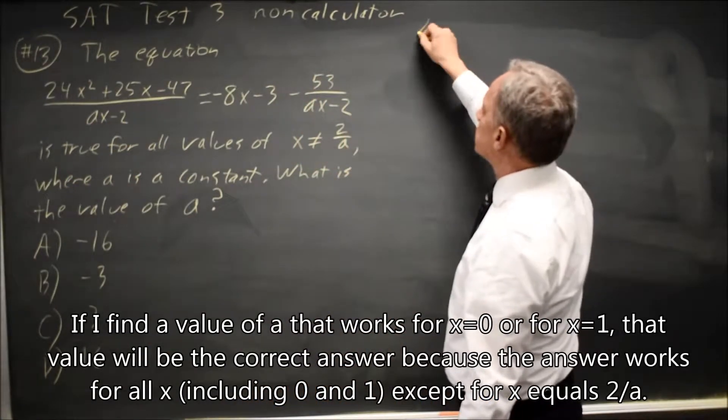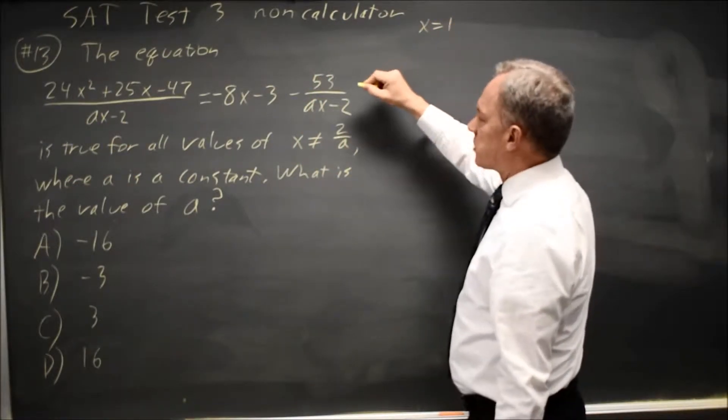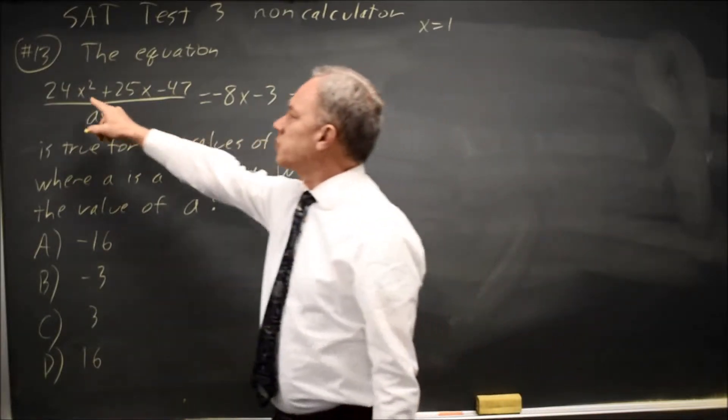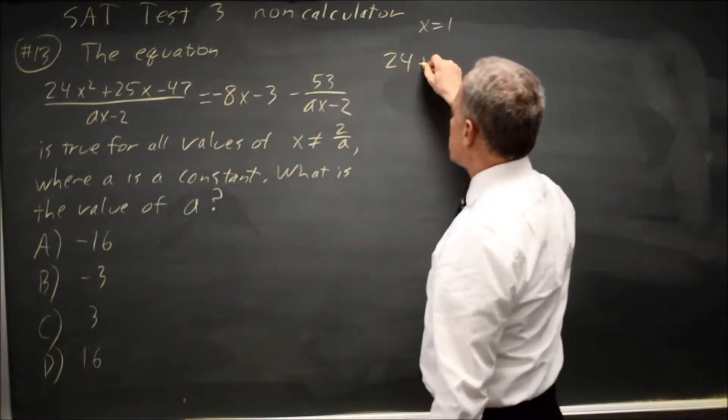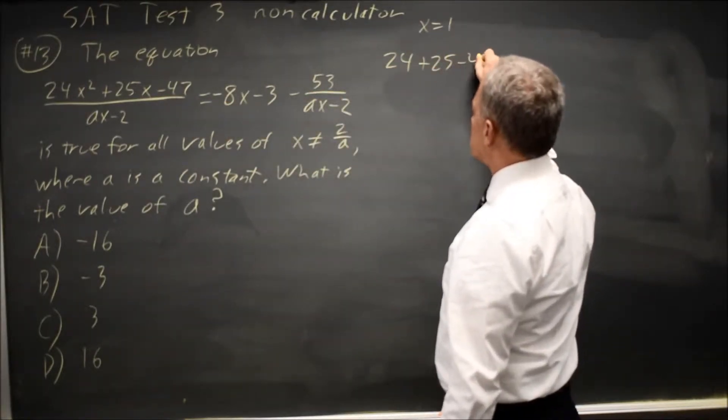Let's try X equals 1, because that's the other number that's easy to work with. So that's 24 times 1 squared is 24, plus 25 times 1 is 25, minus 47,